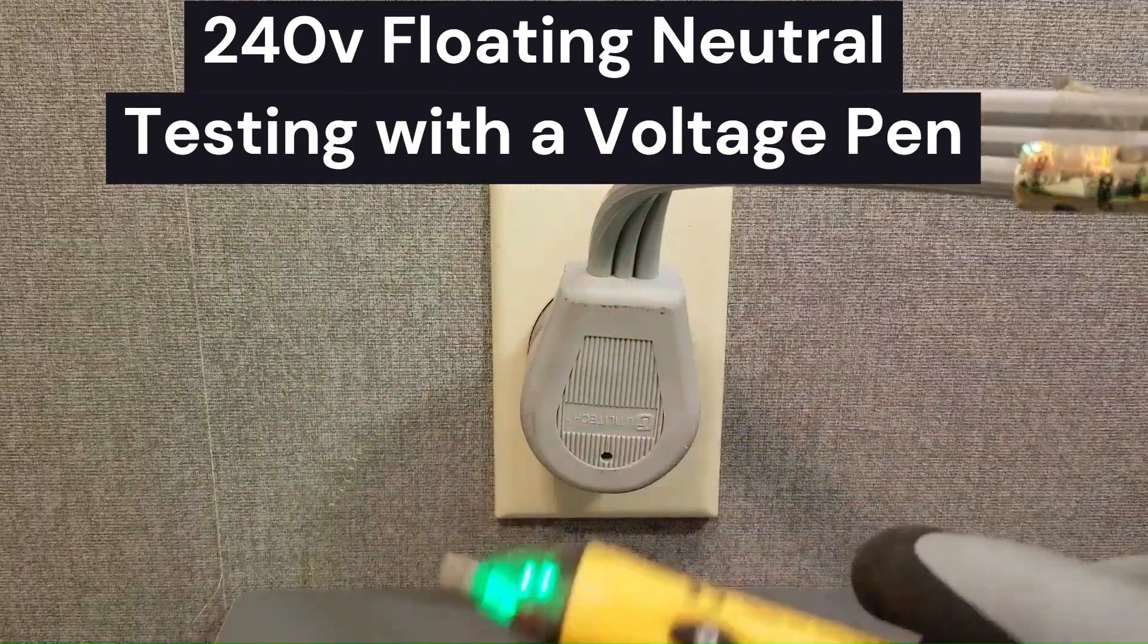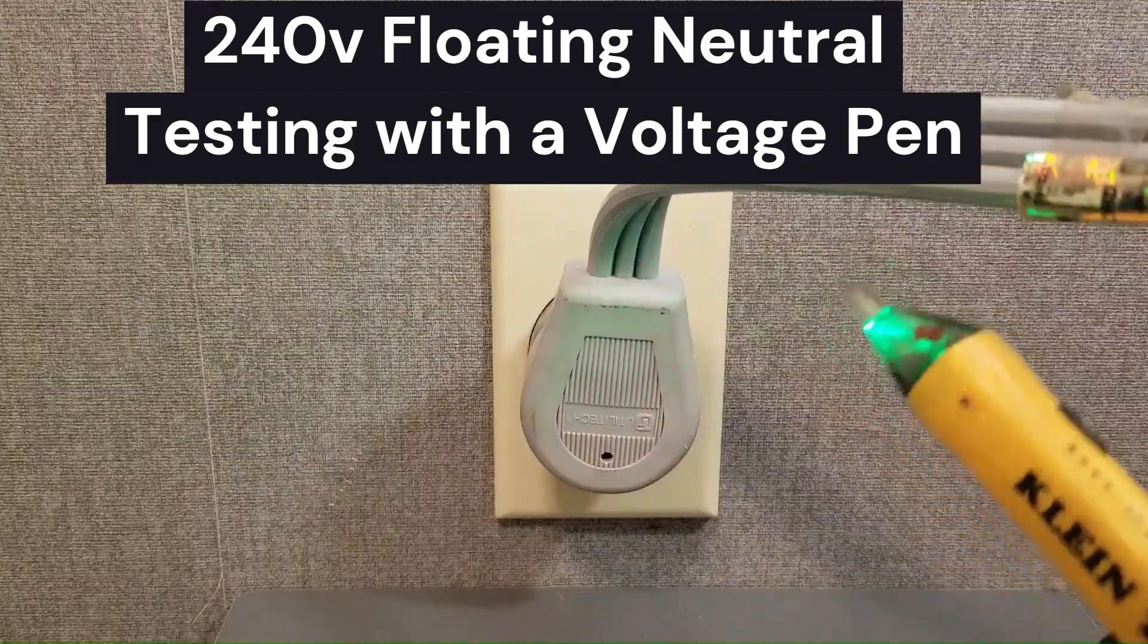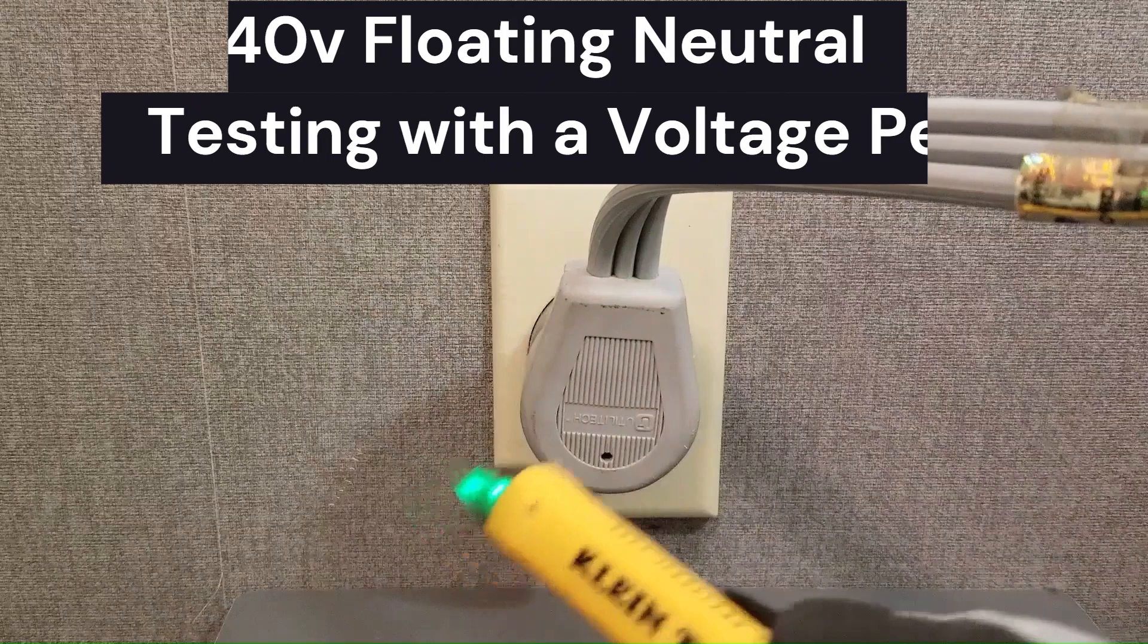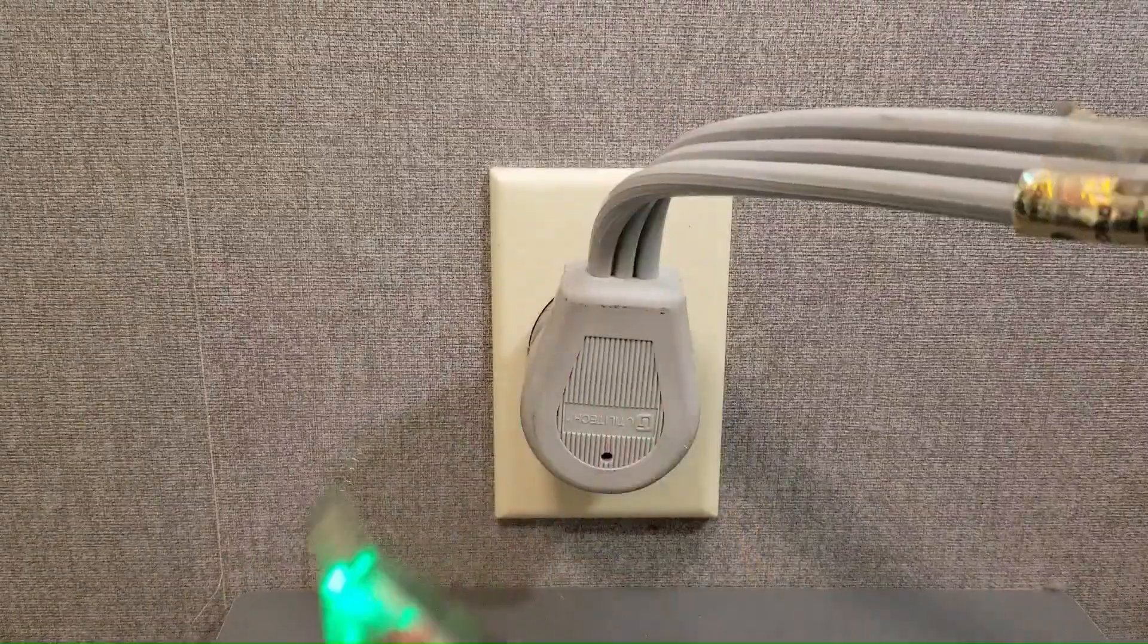So we have a compromised voltage source here. The dryer is not starting and I've already determined that there's a problem with this voltage source, this receptacle. I want to show you how you can use a voltage pin to detect a floating neutral.